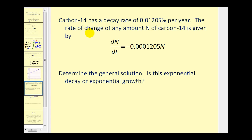Carbon-14 has a decay rate of 0.01205 percent per year. The rate of change of any amount n of carbon-14 is given by this differential equation. Now that we know this matches the form where the solution would be an exponential equation, where this is k, we don't have to take the time to solve this differential equation. We know that the function would have to be, in this case, n of t is going to be equal to some initial value times e to the power of kt.